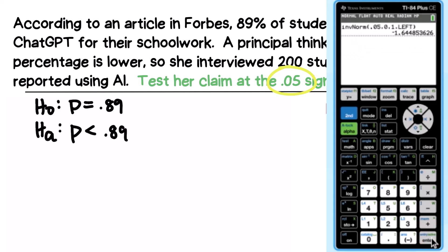And I end up with a critical Z value of negative 1.6448. We're going to call that negative 1.645. So step number one, step number two, our critical Z value is equal to negative 1.645.